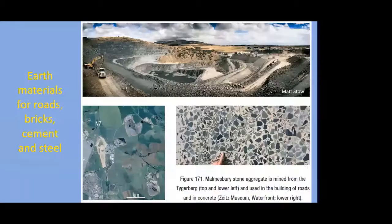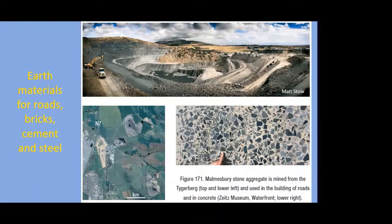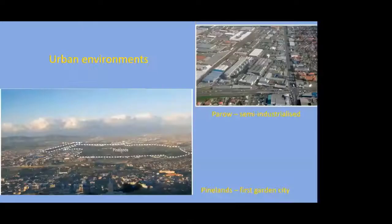They did that by dredging sediment out of the bay to form the docks to the north, and also dredged Rietvlei — the wetland above the Salt River and Diep River mouths. This is an example of a major reconfiguration of a bay, very typical of large coastal cities. San Francisco is another good example where much of the bay area has been filled for building. To do this building we need earth materials — this is a photo of the aggregate mine in the Tygerberg. Those big pits are visible from the air and the aggregate is used to make concrete for buildings and asphalt for roads.